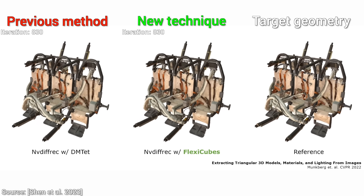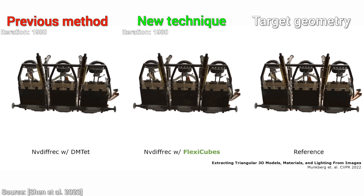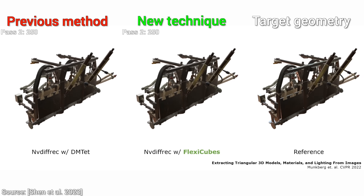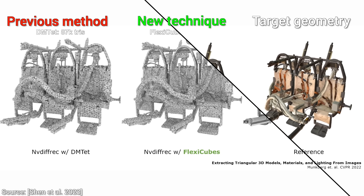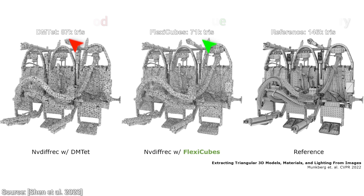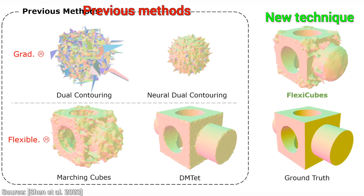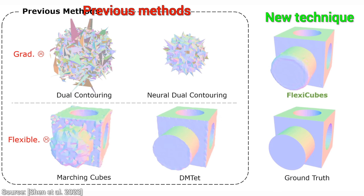This animation shows that the new technique once again converges to the desired geometry. But wait — that is not only a better piece of geometry, but it also uses about 20% fewer little triangles to accomplish that. This means that these models will require less memory and can be rendered faster.